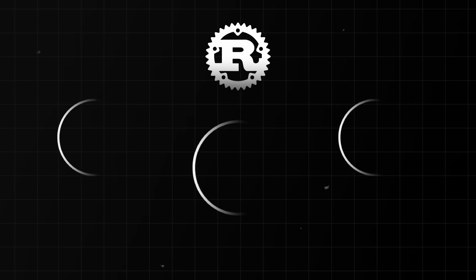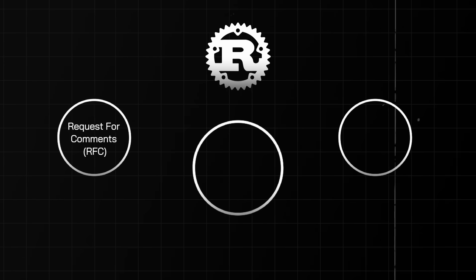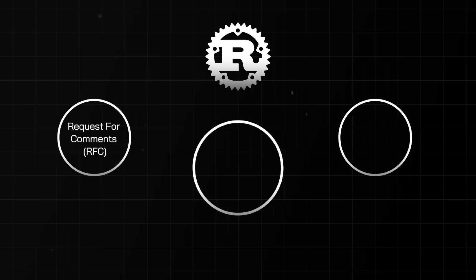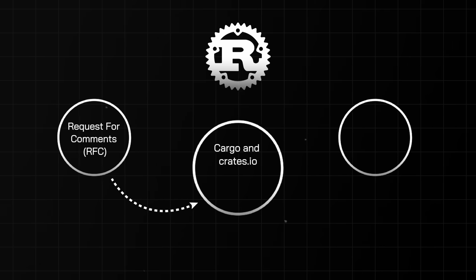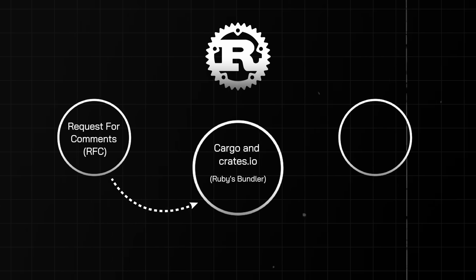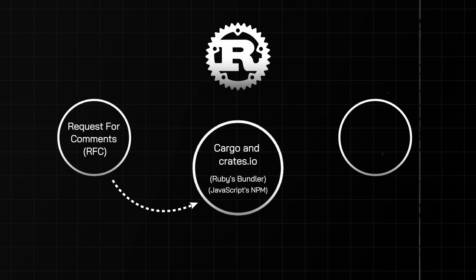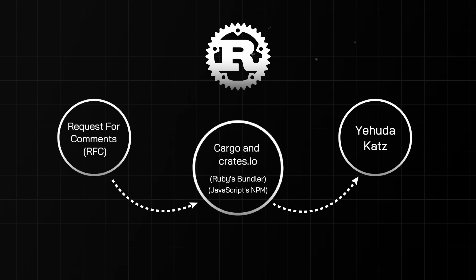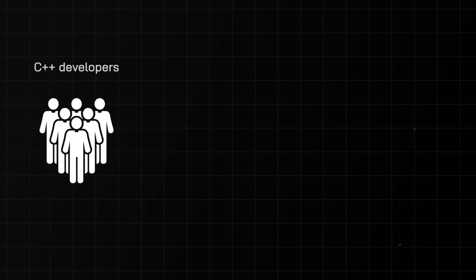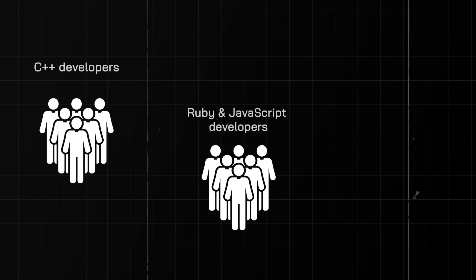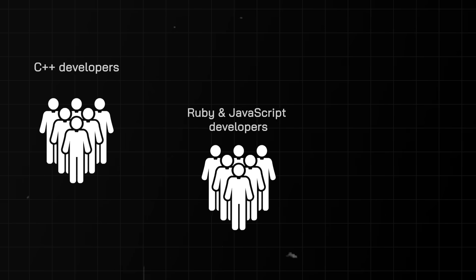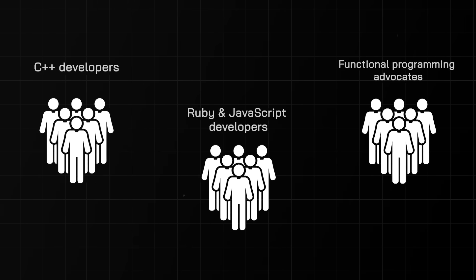This approach allowed many different perspectives to be considered, fostering thorough discussions and establishing robust decision-making processes. In 2014, Rust drew inspiration from Python's PEP system and introduced the RFC — Request for Comment — process, which promoted thoughtful discussion and collaboration for new Rust features. The launch of Cargo and Crates.io soon followed to create effective package management and central repositories. The Rust team was inspired by Ruby's Bundler and RubyGems.org, as well as JavaScript's NPM and NPMJS.com. Yehuda Katz, known for his work on Ruby's Bundler, was even brought onto the Rust team. Rust's development was further influenced by three distinct user groups: C++ engineers, Ruby and JavaScript developers, and functional programming advocates from the Haskell community. These diverse contributions shaped Rust into a language known for robustness and versatility.